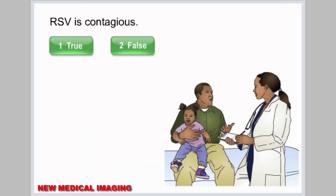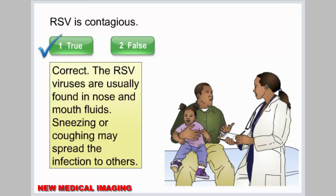RSV is contagious — true or false. Correct. The RSV viruses are usually found in nose and mouth fluids; sneezing or coughing may spread the infection to others.